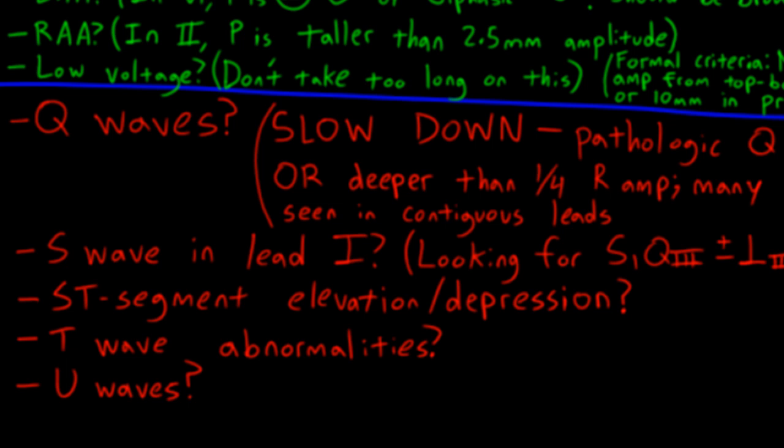Then I look for ST segment abnormalities, T wave inversions. And then finally, I scan the precordial leads for U waves, which can be found in hypokalemia. Again, we'll talk in more detail about these things later.